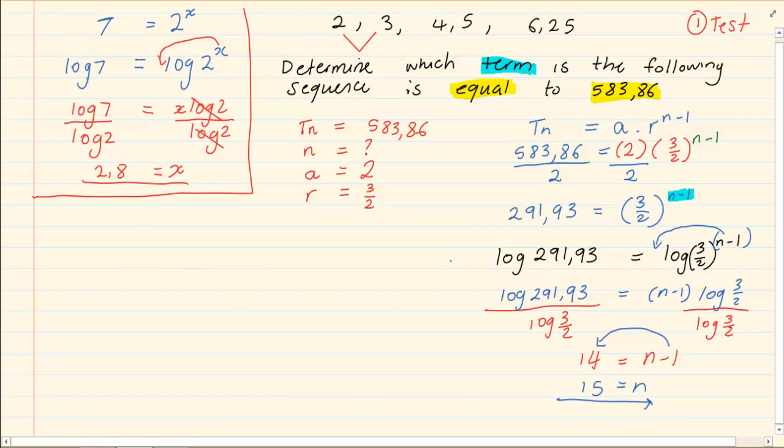When we were doing logs, what we would have emphasized is that it is usually when we have a base but the number next to it is not something we can think of. Like if I got 2 to the power 1 is 2, 2 to the power 2 is 4, 2 to the power 3 is 8, but 7 is odd. So what we do is we add a log on both sides. So we are going to add a log on both sides. Once we add a log on both sides, we are going to bring the power in front. So we bring the x in front. That means we have log 7 is equal to x log 2.